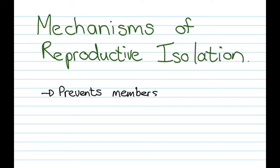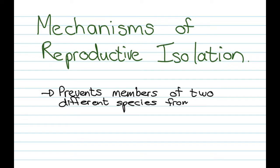Now remember, reproductive isolation prevents members of two different species from producing offspring. So the idea is not to have two different species mix.